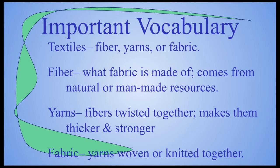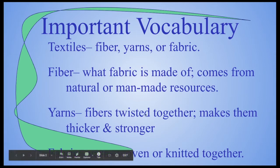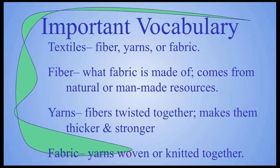A fiber is what fabric is made from. It comes from a natural or a man-made resource, like little fluffs of cotton or wool or other things. Yarns are when we take those little fibers, those little fluffs, and we start twisting them together. Once we twist them together, it makes them thicker and stronger. If you've heard of spinning, this is the idea of spinning.